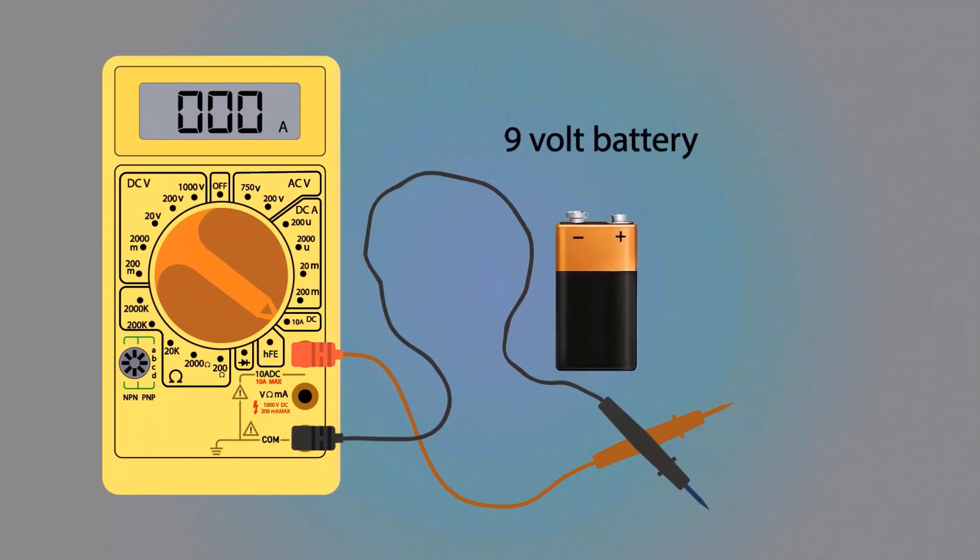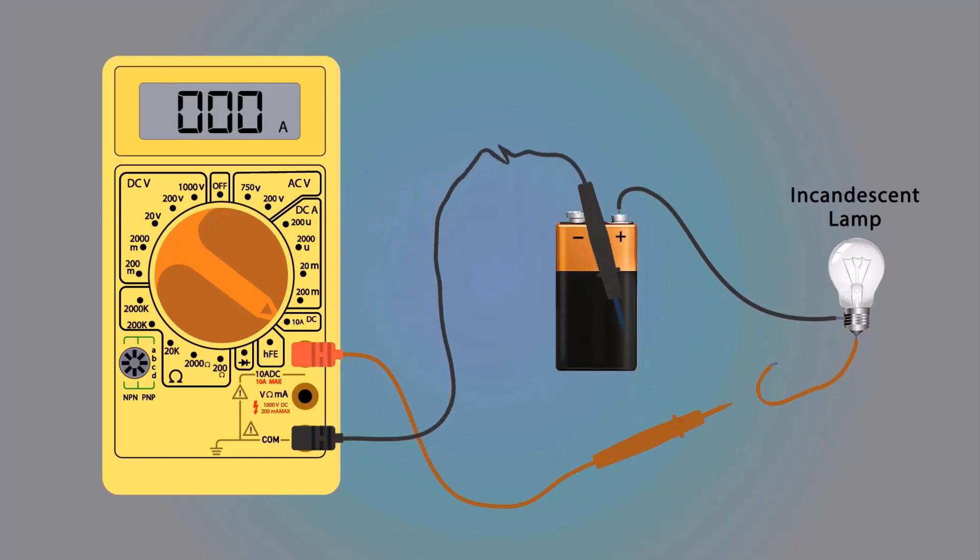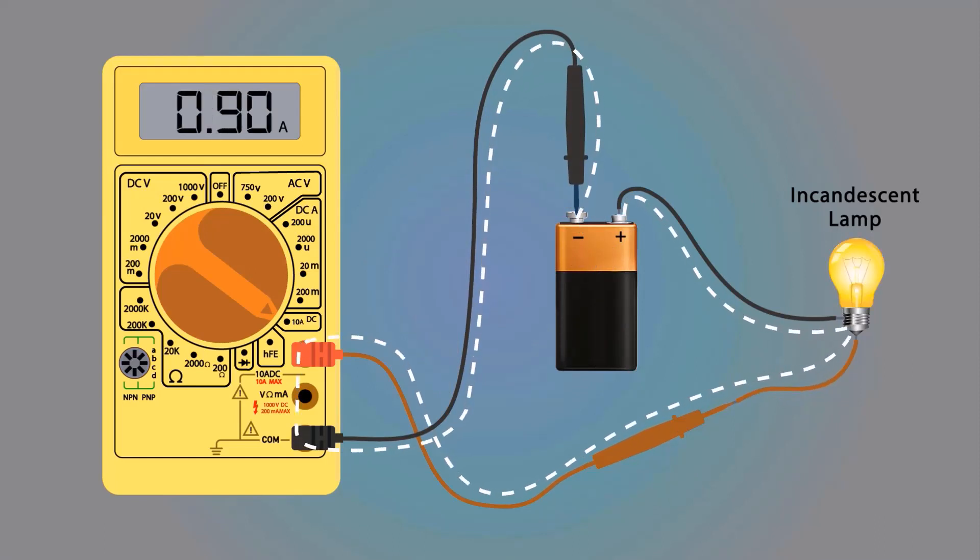Take a 9 volt battery. Take an incandescent lamp. Connect the black wire of the incandescent lamp to the positive terminal of the battery. Connect the black wire of the multimeter to the negative terminal of the battery. After that, connect the red wire of the incandescent lamp to the positive probe of the multimeter.